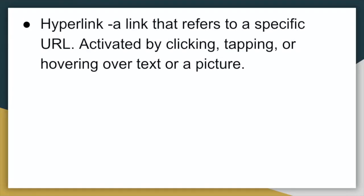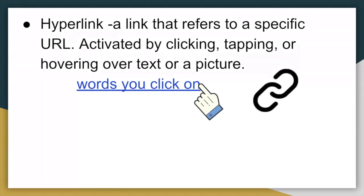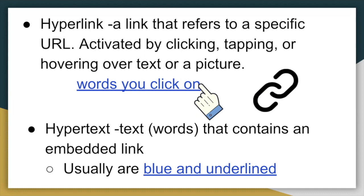A hyperlink is a link that refers to a specific URL or web page. It's activated by clicking, tapping, or hovering over the text or picture. The text is usually blue, and you usually get a little hand cursor that lets you know it's a link. Sometimes it's a picture.